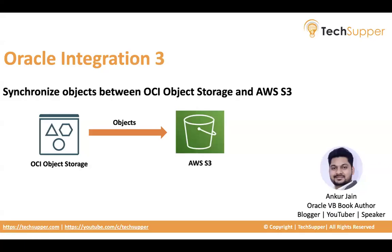Hi everyone, welcome back. In this video, I'm going to show how we can connect two different cloud storages and synchronize the objects. I'm going to take two cloud storages: one is OCI object storage and another is AWS S3. You may need to synchronize the data or the objects from OCI object storage to AWS S3 constantly. How this can be done via Oracle Integration? That is what we are going to look at in this whole video.